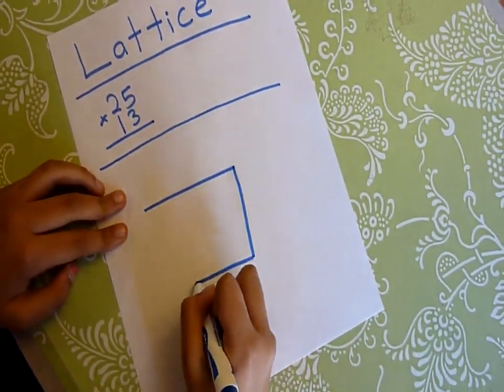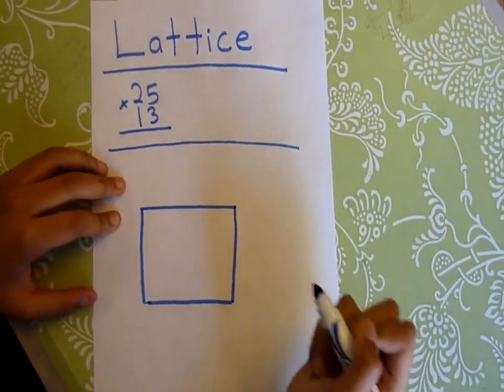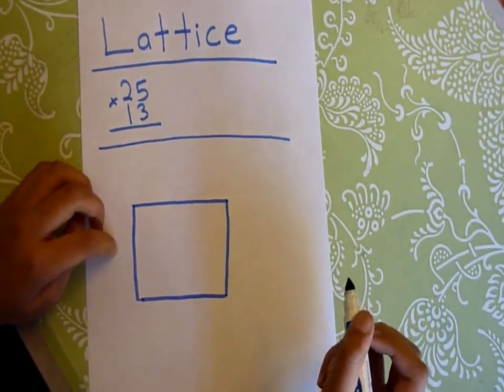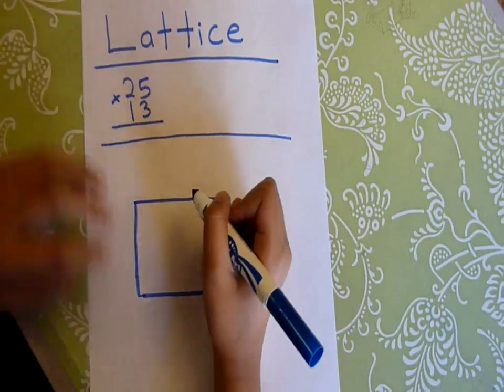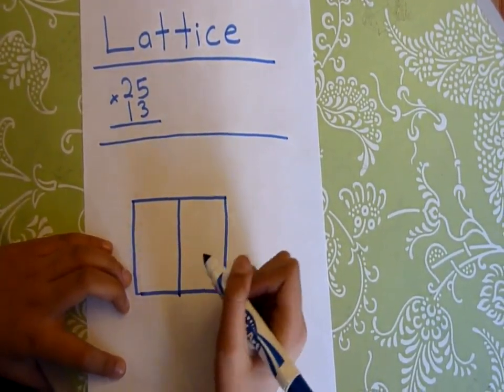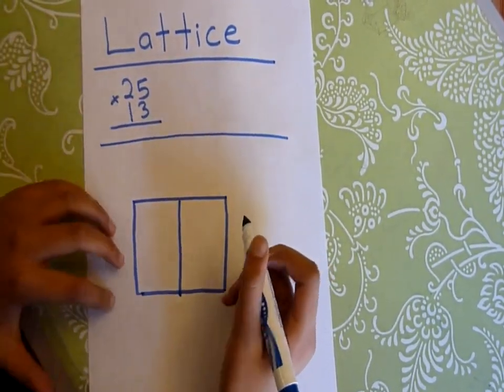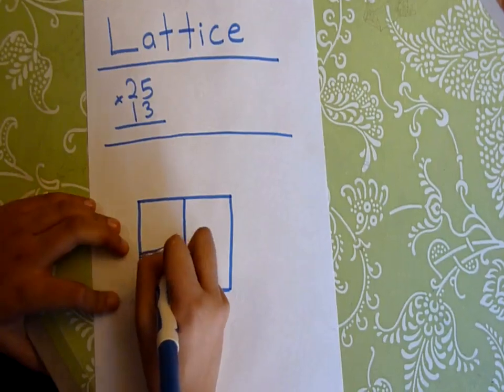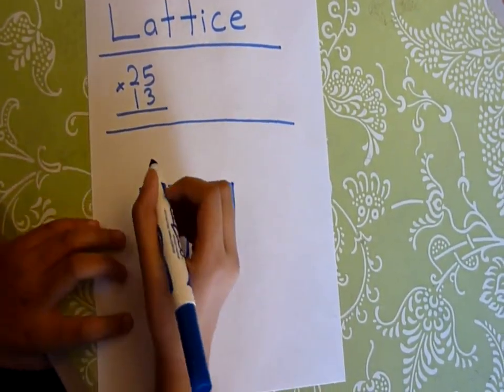It comes out to be a rectangle. Since there are two digits here you have to have two columns, and then since there are two digits on the second number you need to have two rows.